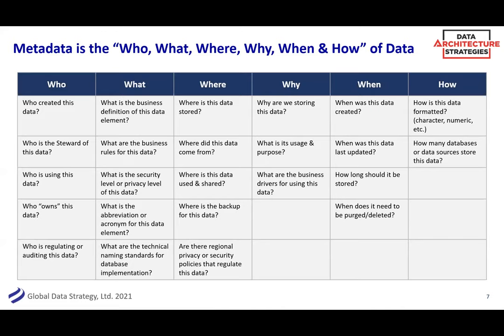I often jump right into examples because generally metadata is fairly intuitive. I use this document framework of metadata: who, what, where, why, when, and how. In metadata we often focus on the 'what' — the business definitions, business context, business rules, or the technical data types. 'Who' is super important as it relates to governance — who's the data steward, who's the owner, who's regulating or auditing it, who are the business users? 'Where' in terms of where the data is stored — we're looking at lineage, compliance, is it in Europe or the US?